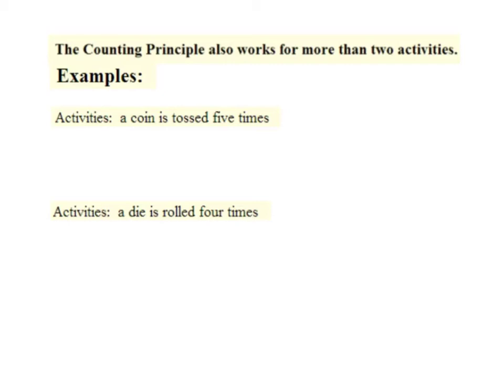So the counting principle also works for more than two activities. Say for instance you have a coin, but you toss that coin five times. So the blanks here, one, two, three, four, five, are the possible coin tosses. And each time you toss a coin, you have two possibilities. So when you toss it this many times, this is two to the fifth power or 32 possible outcomes.